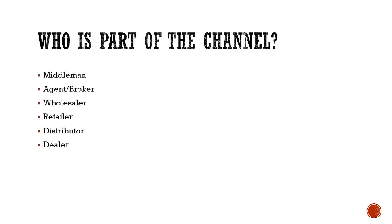So who is part of the channel? Depending on the channel, intermediaries may include a middleman — that's anybody, any intermediary between the manufacturer and the end user. The agent or broker is an intermediary with legal authority to act on behalf of the manufacturer.